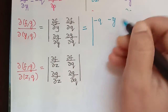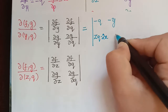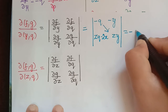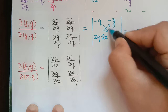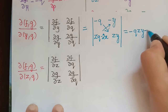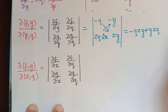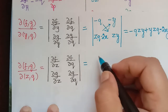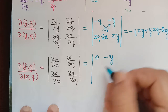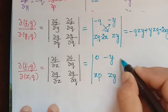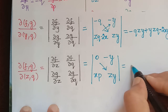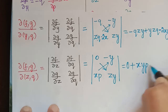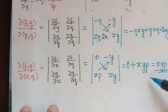The third Jacobian uses ∂f/∂y = −q, ∂f/∂q = −y, ∂g/∂y = zq − 2x, ∂g/∂q = zy. The determinant gives −qzy minus (−y)(zq − 2x) = −qzy + yzq − 2xy... simplifying to −2xy. Wait, let me note: the result includes −qzy + yzq terms and +2xy. The fourth Jacobian uses ∂f/∂z = 0, ∂f/∂q = −y, ∂g/∂z = xp, ∂g/∂q = zy, giving 0 minus (−y)(xp) = xyp.